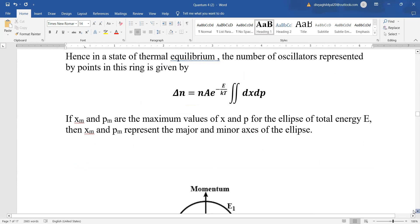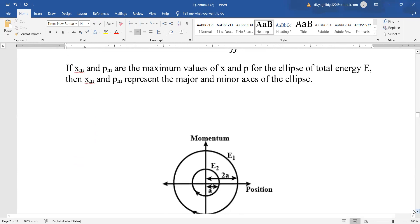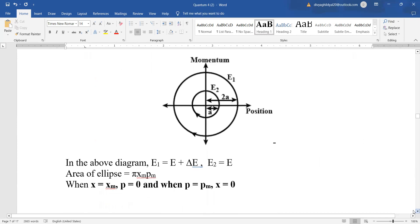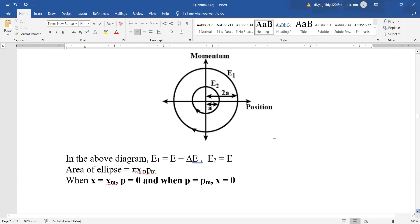Now, look here. Look at this diagram here. If xm and pm are the maximum values of x and p for the ellipse of total energy e, then they are representing the major and the minor axis of the ellipse. Here, this is e and even is e plus del e and we are only taking the space between them. We have discussed this diagram also under Maxwell Boltzmann statistics. If you want, you can refer to it again and we are only concerned with the area of this ellipse which is equal to π xm pm.